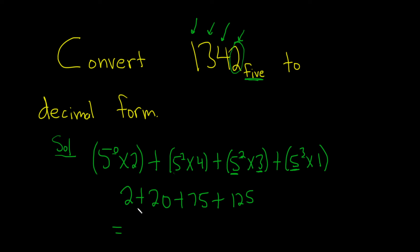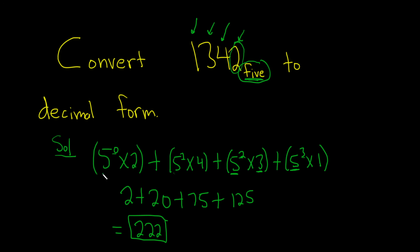I got 222. So this would be the base 10, or decimal form, of this number that's in base 5. Just always start with whatever number is here raised to the 0 power, multiply it by each digit, and go down the line. Always works — I got 222.